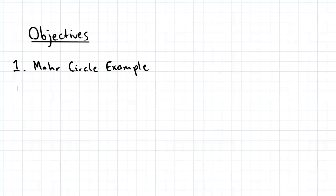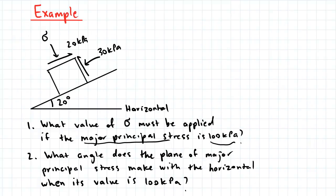Hey guys, the objectives of today's video is to go through a slightly harder example of Mohr Circle. So here we have a soil element lying on a plane inclined at 20 degrees above the horizontal, and there are shear stresses and normal stresses acting on the soil element, but one of the normal stresses is unknown, which is what we're trying to find. We're also given that the major principal stress is 100 kilopascals.